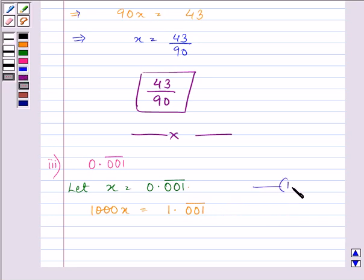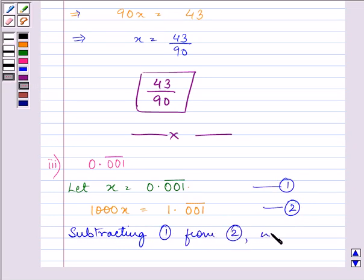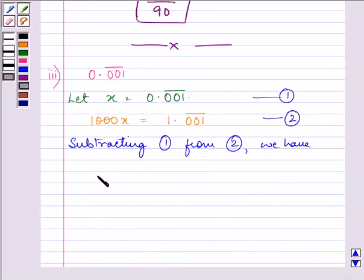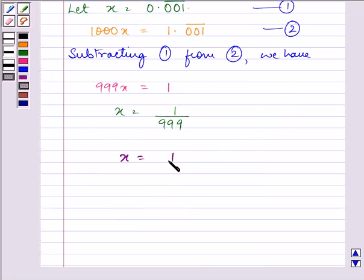Let this be the first equation. This be the second equation. Now on subtracting first equation from second equation we have 999x equals 1 which gives us the value of x as 1 divided by 999 and this is the answer of the last and final part.